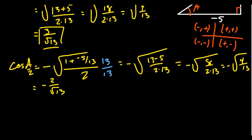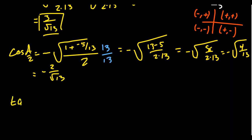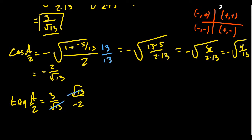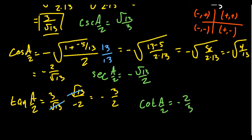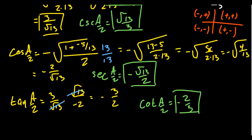Now that we have sine and cosine, we can find the remaining trig functions. Tangent of a/2 equals sine over cosine: (3/√13) divided by (negative 2/√13). Multiplying by the reciprocal gives (3/√13) times (√13/negative 2). The square roots of 13 cancel, giving tangent of a/2 equals negative 3/2. Cosecant of a/2 is the reciprocal of sine: square root of 13 over 3. Secant of a/2 is the reciprocal of cosine: negative square root of 13 over 2. Cotangent of a/2 is the reciprocal of tangent: negative 2/3. We can compute all six trigonometric ratios using the half-angle identities — the key is finding sine and cosine first.